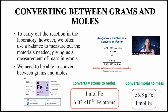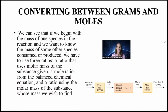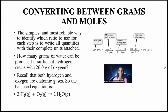The simplest and most reliable way is to write all quantities with their complete units attached. Example: How many grams of water can be produced if sufficient hydrogen reacts with 26 grams of oxygen? Recall that both hydrogen and oxygen are diatomic gases, so the balanced equation is: 2 H2 (g) + O2 (g) → 2 H2O (g). The molar mass of O2 is 16 × 2 = 32 grams per mole. The mole ratio is 2 moles of H2O per 1 mole of O2.